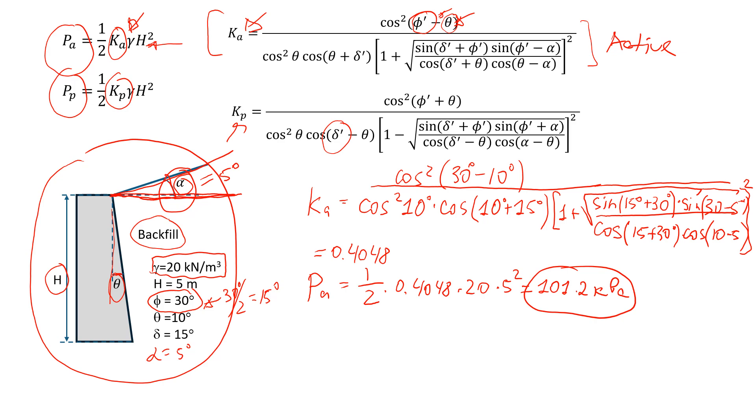So now let's estimate the passive pressure. Let's change some numbers. Let's say that there is no slope and alpha is equal to 0 degrees, which is very common in practice. Also, let's assume theta is equal to 0 degrees. Again, very common in practice. Still, we're going to keep the same friction angle, which is 30 degrees, and then the friction between the wall and the soil will be half of that, 15 degrees.